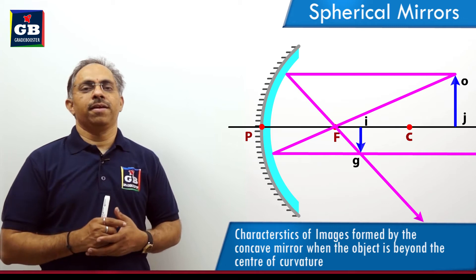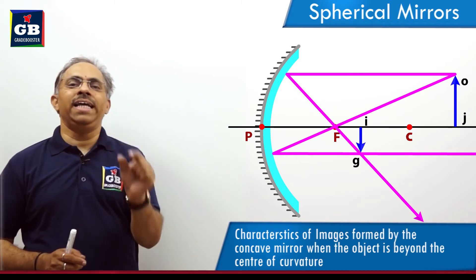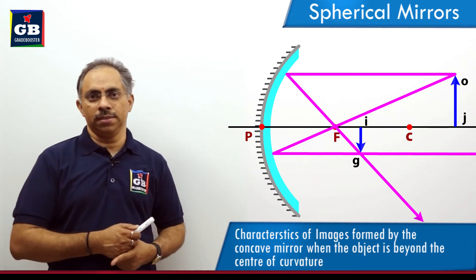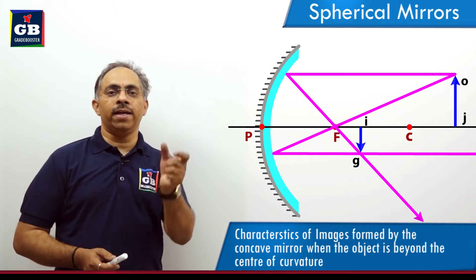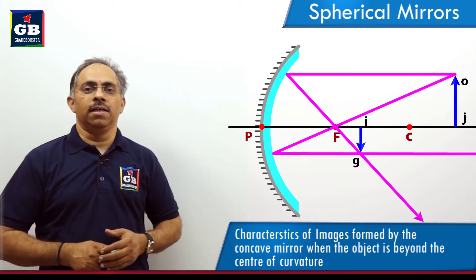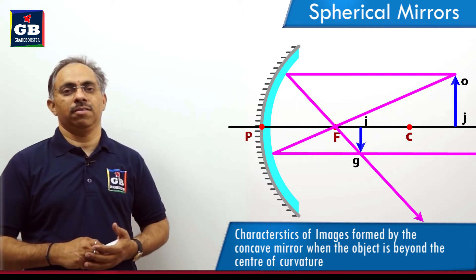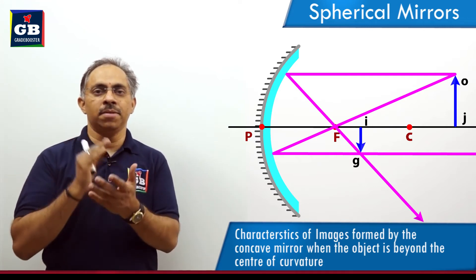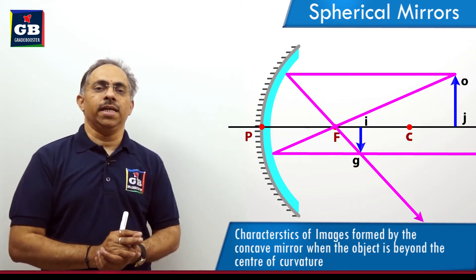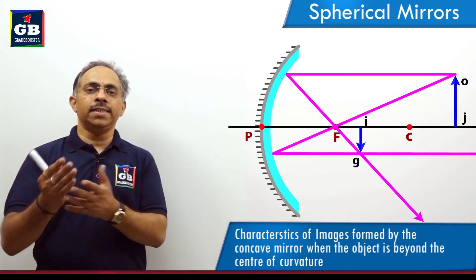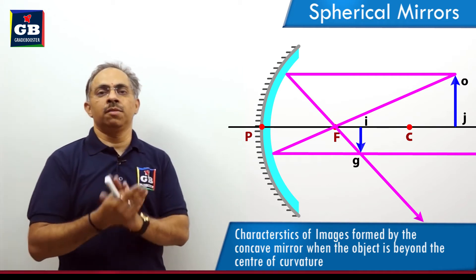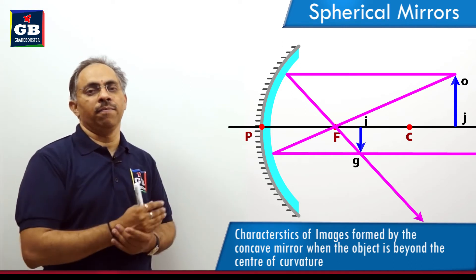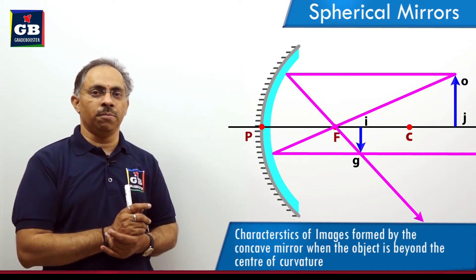The image is not highly diminished and is not formed at the principal focus. Comparing to the previous case where the object was at infinity, the size of the image has increased a little. It is not a point image anymore but a dimensional image with certain measurements. As we bring the object further toward the mirror, the image size is gradually increasing.